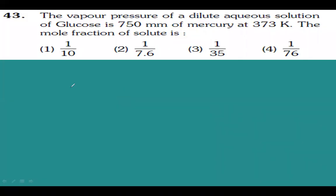The question is: the vapor pressure of dilute solution of glucose is 750 mm of mercury at 373 Kelvin.